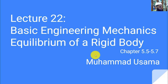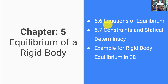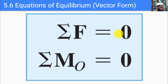Welcome to lecture number 22 for basic engineering mechanics. In this lecture we will cover the equilibrium of a rigid body in three dimensions. We will first look at the equations for equilibrium in three dimensions, then look at constraints and statical determinacy, and finally look at an example for rigid body equilibrium in three dimensions.